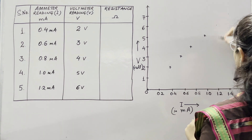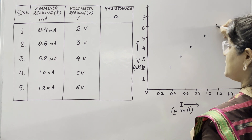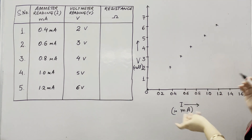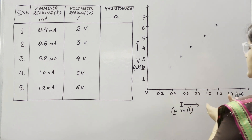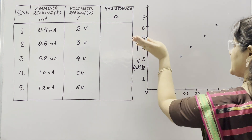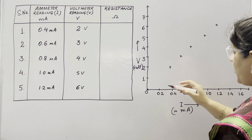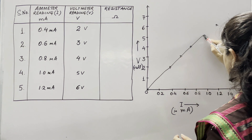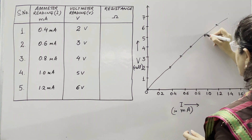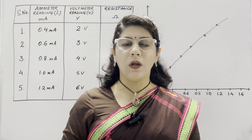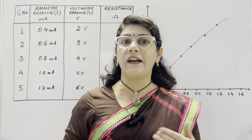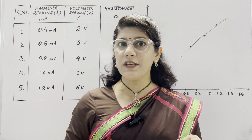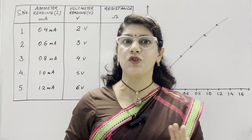Then 1.2 milliampere corresponds to 6 volt on voltmeter. As we increase the current, our value of voltage is also increasing. If we plot this graph, it comes out to be a straight line starting from origin — it means voltage and current are directly proportional. According to Ohm's law, current flowing in a conductor is directly proportional to the potential difference applied across its ends, provided physical conditions and temperature remain constant.